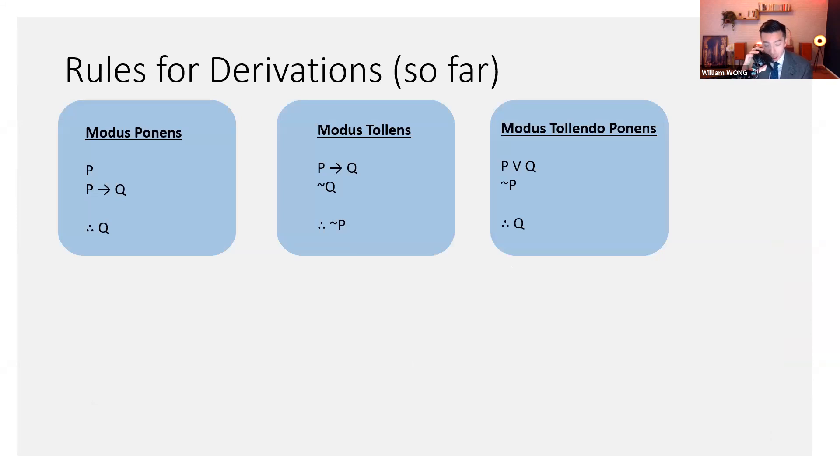So, I mentioned there were some rules. Here are three rules so far. MP, MT, and MTP.